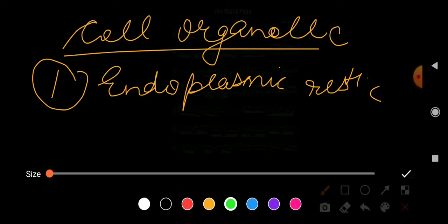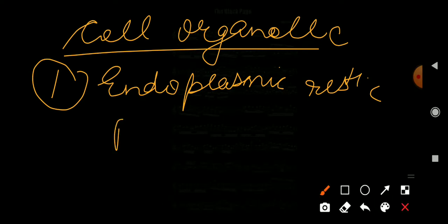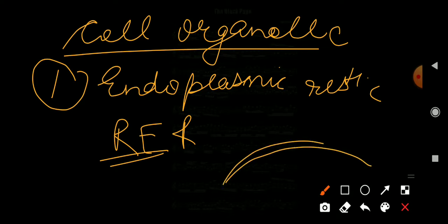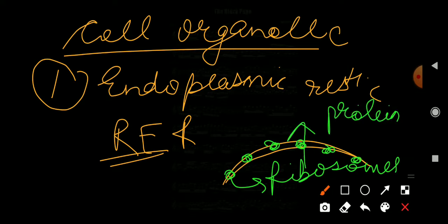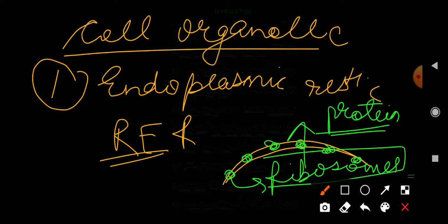Rough endoplasmic reticulum — the main point to understand is that its surface is rough. On the surface of this endoplasmic reticulum, ribosomes are present. These ribosomes help in the formation of protein. That is why the rough endoplasmic reticulum looks rough under a microscope — it has particles known as ribosomes which help in the formation of protein.